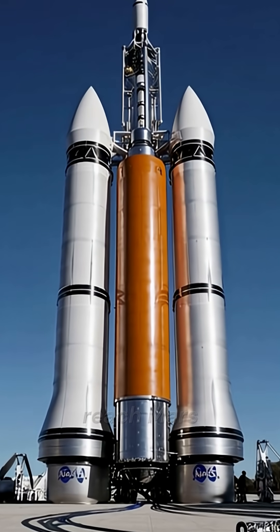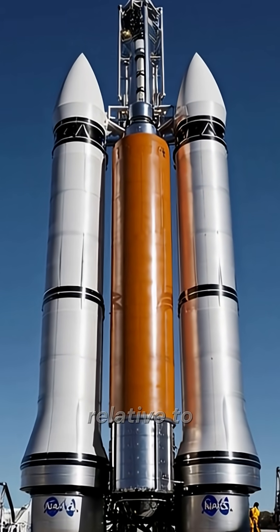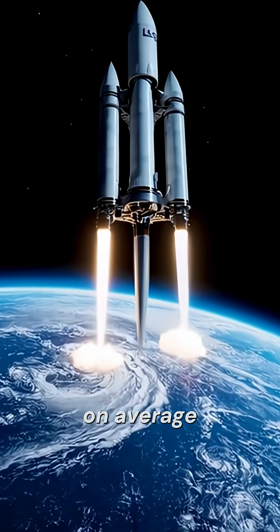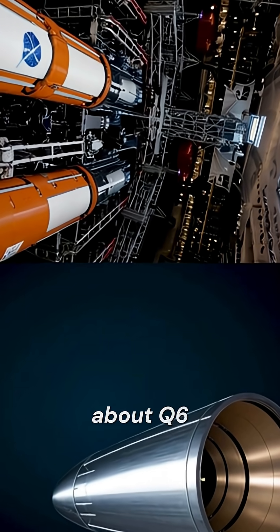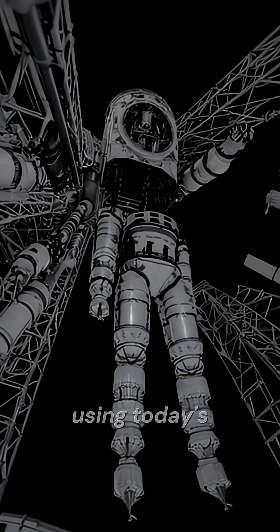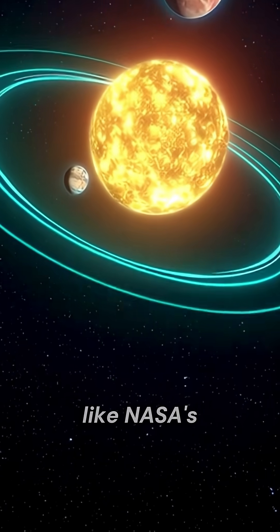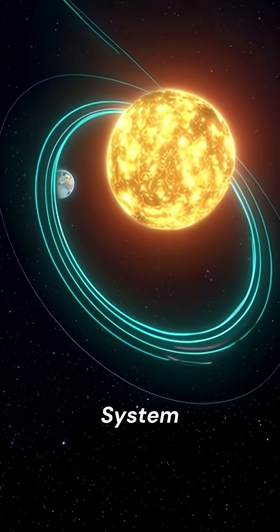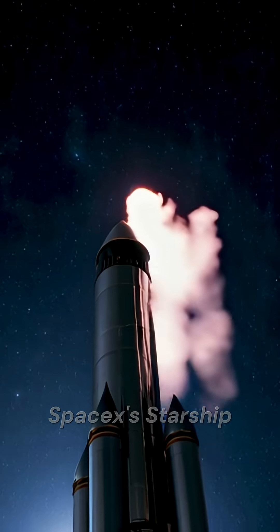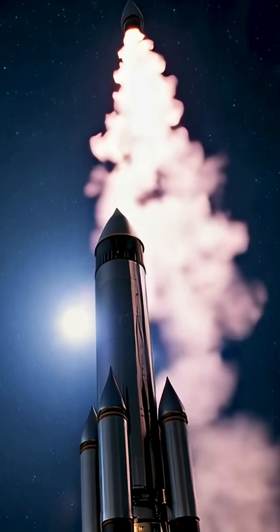The time it would take to reach Mars depends on its position relative to Earth. On average, the journey would take about 6 to 9 months using today's spacecraft, like NASA's Space Launch System or SpaceX's Starship.